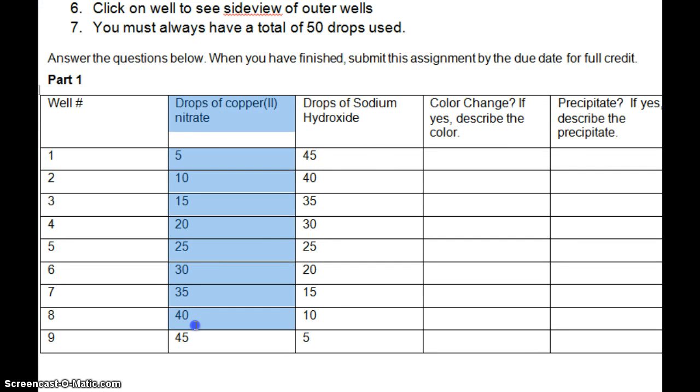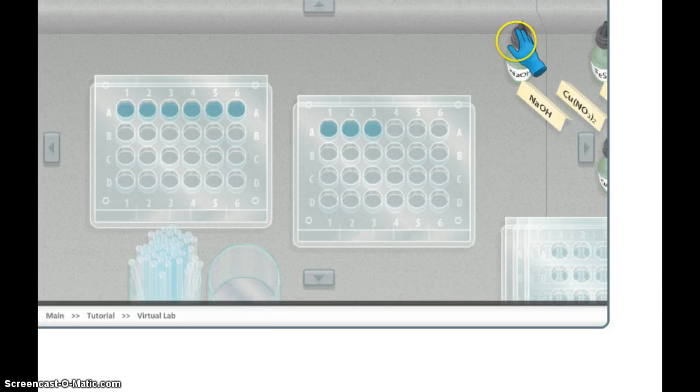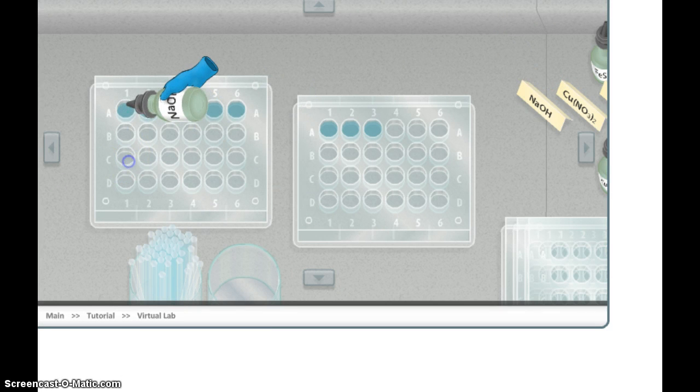Okay. So I already added this whole column of copper nitrate. And now we have to add this column of sodium hydroxide. So we're going to start with forty-five. And then we need forty in this one because it always has to add up to tons. And we can see we already have a reaction. So that's good. Counting up to forty drops total.